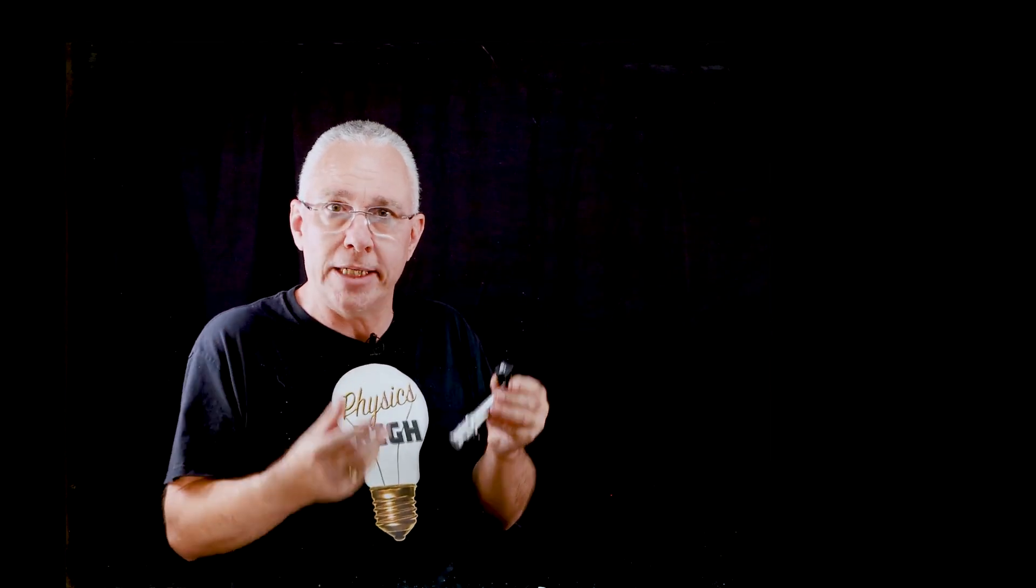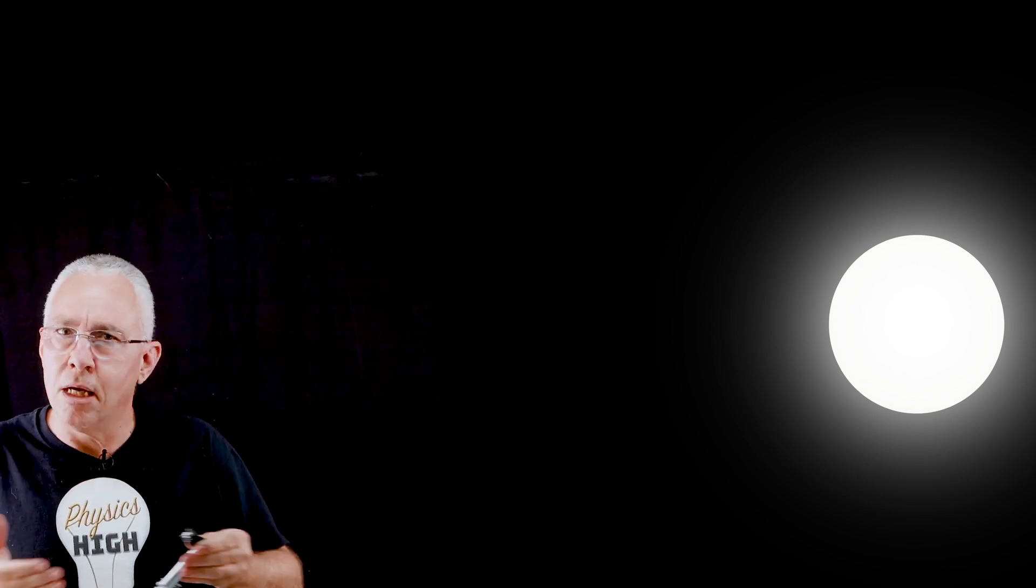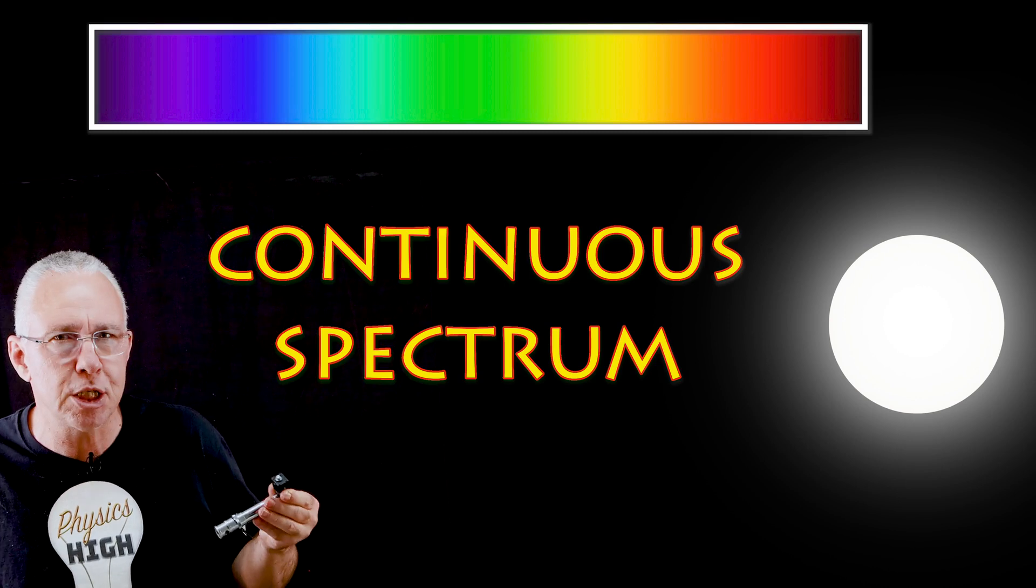What if I were to point my spectroscope at a light source that is a white light source? What I see is a rainbow, or better language, a continuous spectrum.